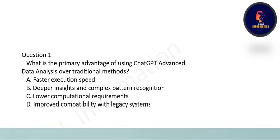It's unit number six: ChatGPT Advanced Data Analysis, and we will see 25 questions from this unit because there are not much in this unit to be asking in the exam. The first question is: what is the primary advantage of using ChatGPT Advanced Data Analysis over traditional methods? The correct answer is option B: deeper insights and complex pattern recognition.